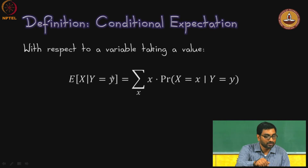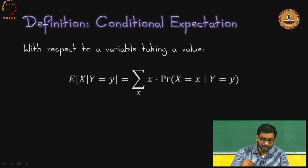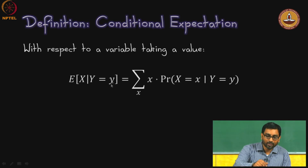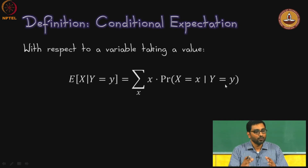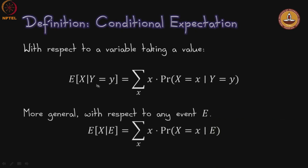In the branching process example, Y represented the number of mothers and X the number of daughters. When the number of mothers is a specific value, you ask what is the expected number of daughters. The formula is straightforward: without the condition it would be the sum over x of x times the probability of x, but with conditionality you add the conditionality to the probability as well. Essentially, you are limiting the sample space to just the portion where Y equals little y. You can also write the expectation of X given some event F in a similar fashion.